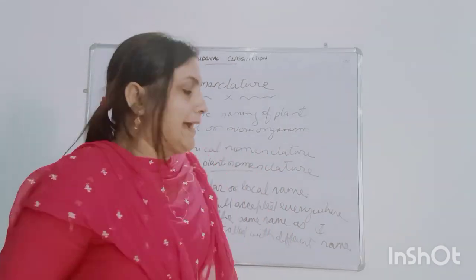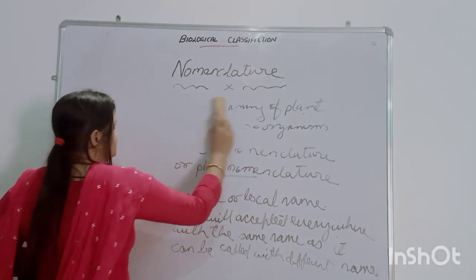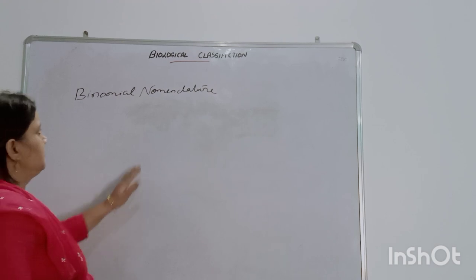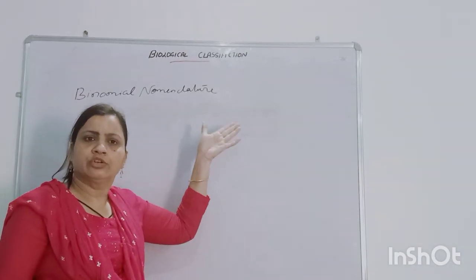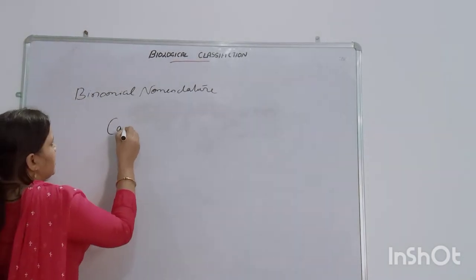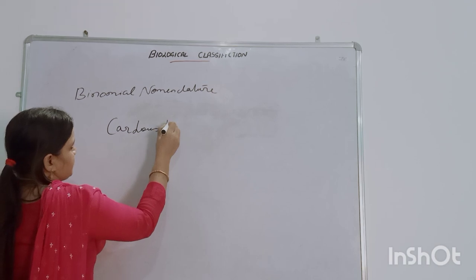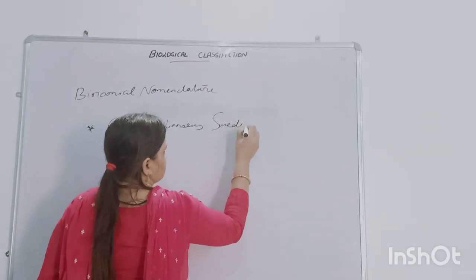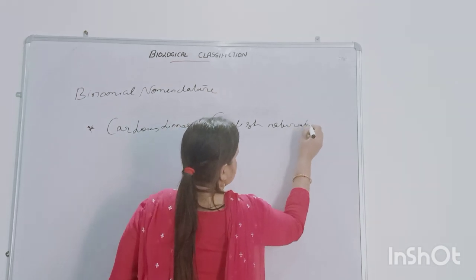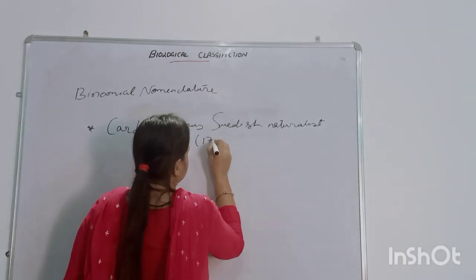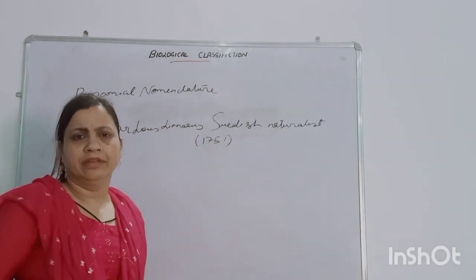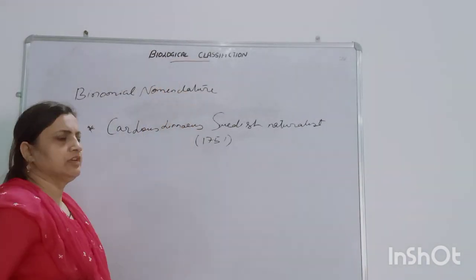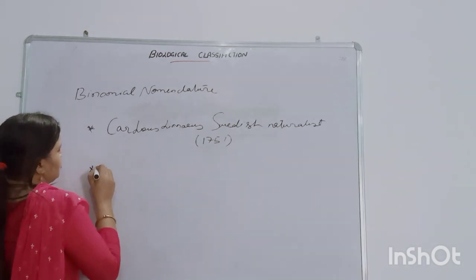So we come to what is binomial nomenclature. Binomial nomenclature was first proposed by Carlos Linnaeus, a Swedish naturalist, in the year 1751. According to binomial nomenclature, the naming of any living organism is characterized into two names.